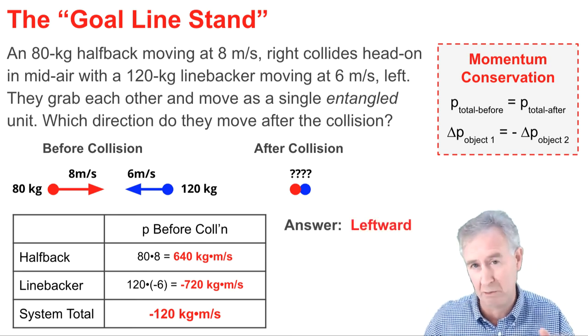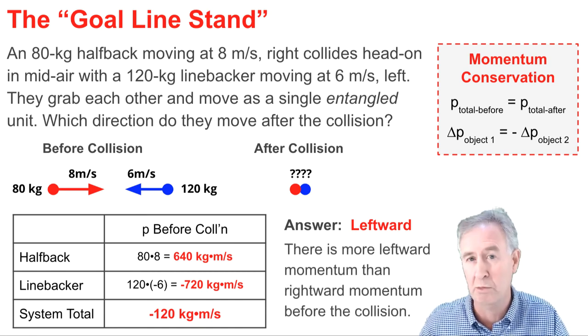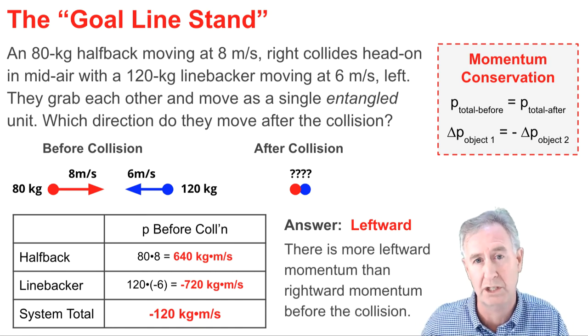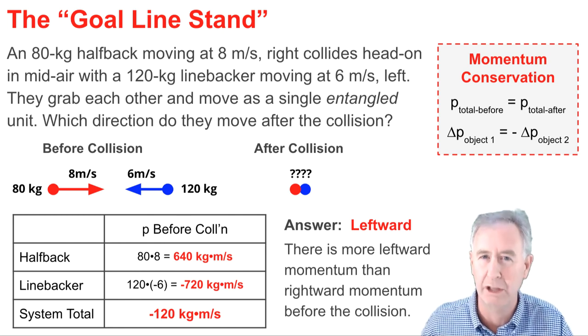The answer to this question is they will be moving to the left. And the reason is because the linebacker has more leftward momentum before the collision than the halfback has rightward momentum before the collision. This is an effective goal line stand.